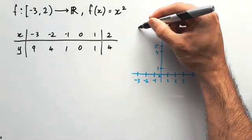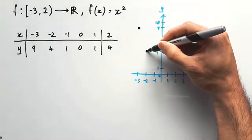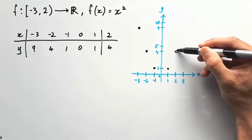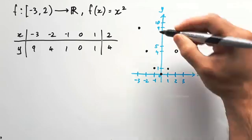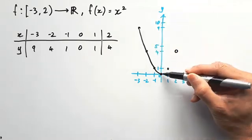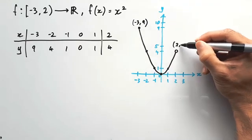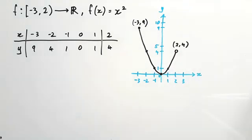So plot in all the points, with the one exception that 2, 4 is not included, and so we would draw an open circle, which looks a bit like a doughnut for that point. Drawing through it reveals that we have a parabola, starting from negative 3, 9, finishing at 2, 4. But keeping in mind that that last point on the right is not included.